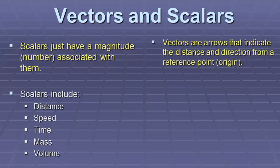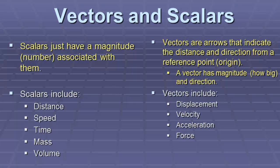A vector, on the other hand, is an arrow that indicates the distance and the direction from the reference point, or your origin. A vector has a magnitude, a number, or how big it is, and a direction. Vectors include displacement, velocity, acceleration, and force.